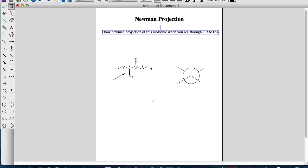What you need to do is to put on those substituents on this carbon. Basically, Newman projection is just rotating this molecule 90 degrees to the right and 90 degrees to the up.